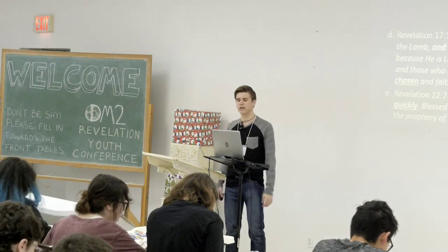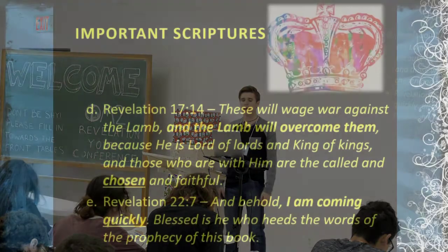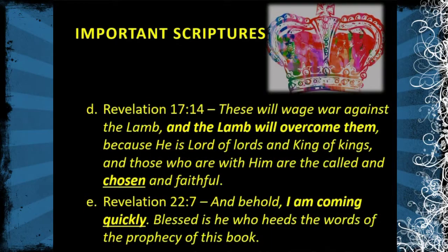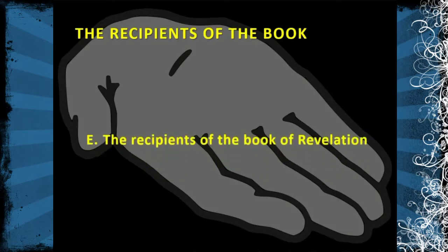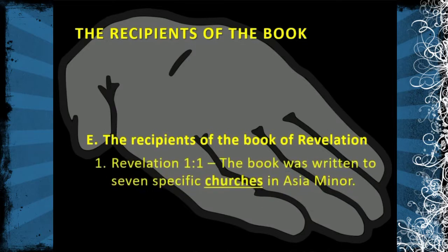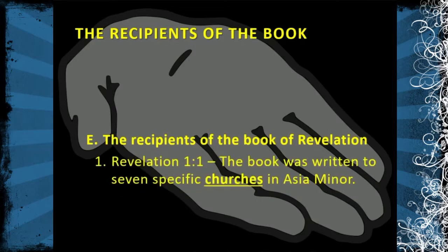Revelation 22:7 says: 'Behold, I am coming quickly. Blessed is he who hears the words of this prophecy in this book.' So who was this book written to specifically? The book was written to seven specific churches in Asia Minor.